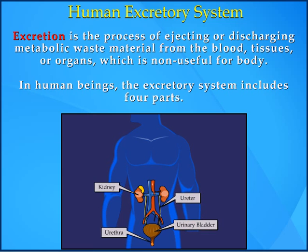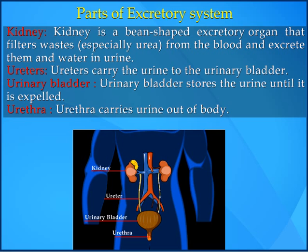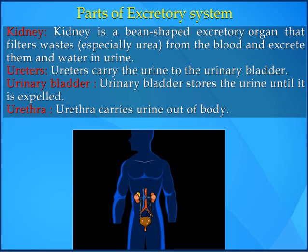Human excretory system. Excretion is the process of ejecting or discharging metabolic waste material from the blood, tissues, or organs, which is non-useful for the body. In human beings, the excretory system includes 4 parts: Kidney — kidneys are bean-shaped excretory organs that filter wastes, especially urea, from the blood and excrete them in water as urine. Ureters carry the urine to the urinary bladder. The urinary bladder stores urine until it is expelled. The urethra carries urine out of the body.